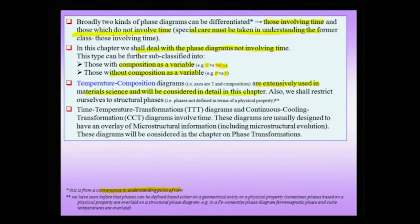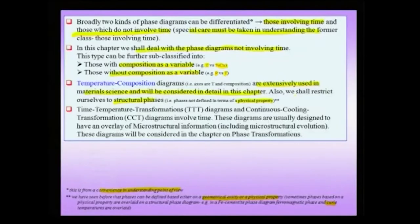We shall also restrict ourselves for now to structural phases. We will not consider phases based on physical property — as we had talked about before, phases can be defined based on a geometrical entity or a physical property, such as a ferromagnetic phase or anti-ferromagnetic phase. If we wanted to overlay physical information, we would need to include Curie temperatures on the phase diagram, but in this chapter we restrict ourselves to the definition of a phase based only on structure and not on physical property.